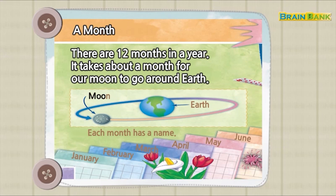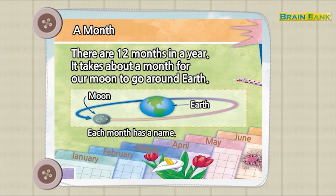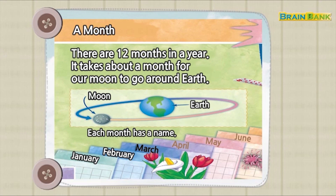Earth. Each month has a name. January. February. April. May. June.